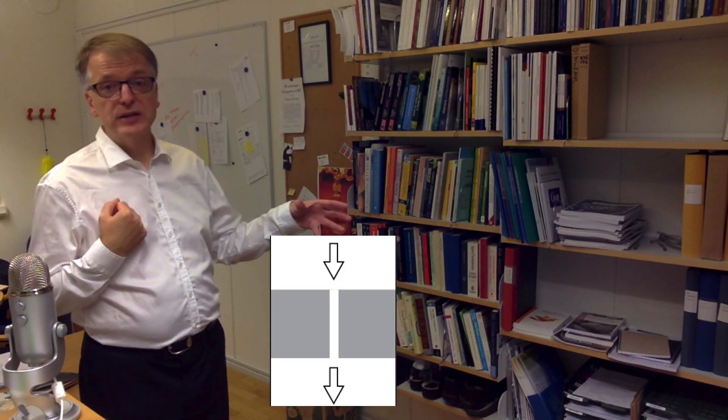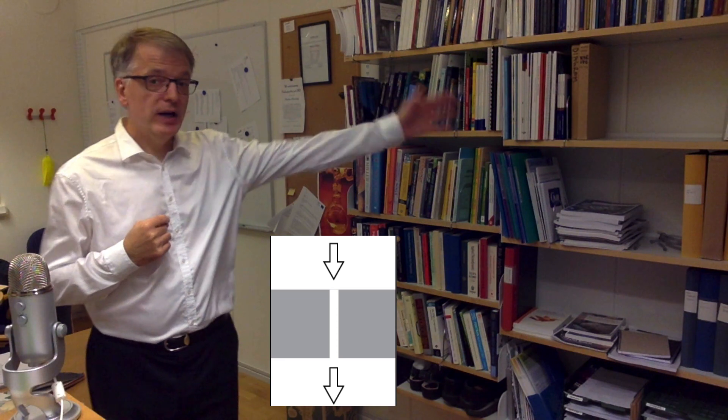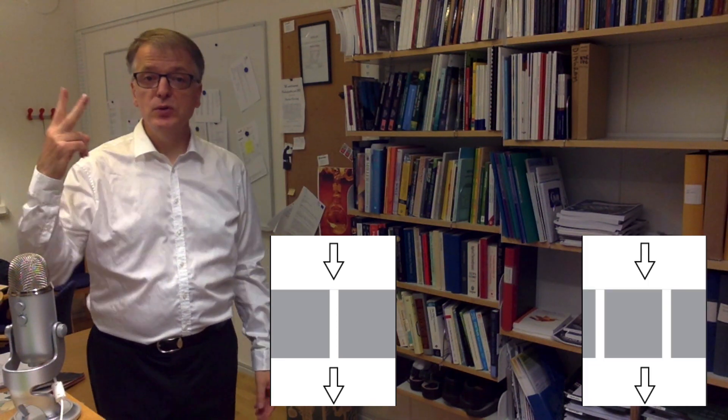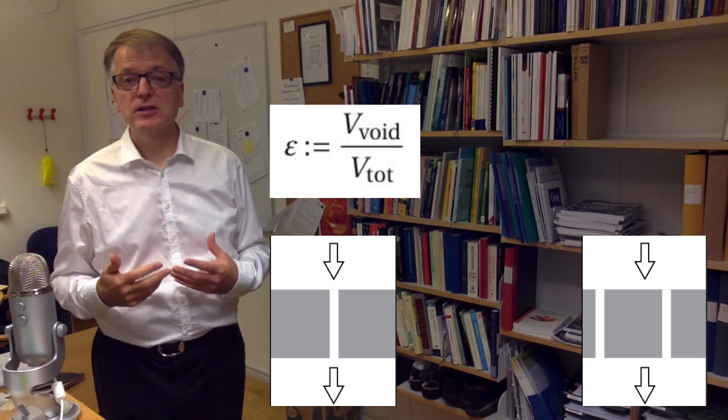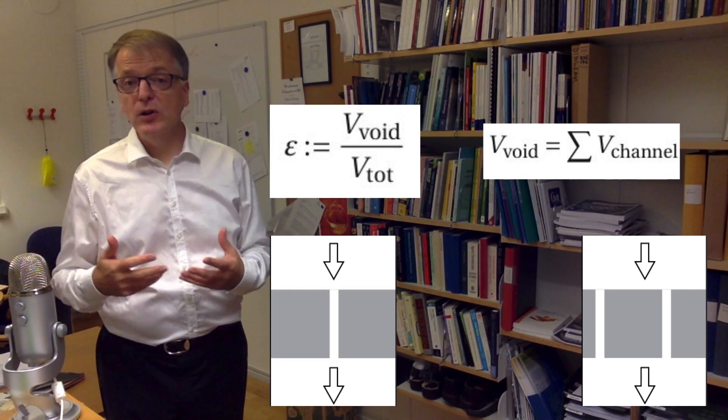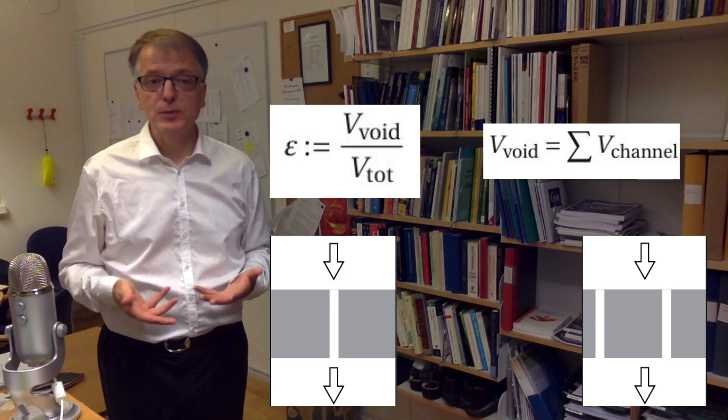In the left illustration here, we have a porous medium with only one channel. To the right, we have a porous medium with two channels. The porosity of a porous medium is the void volume divided with the total volume. That is, the volume of the sum of all channels divided with the total volume.